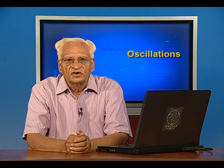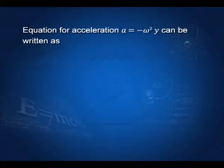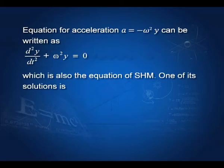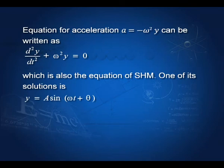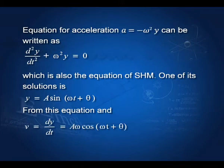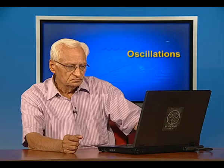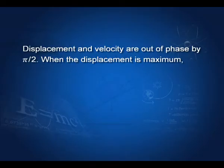The equation a = −ω²y can be written as d²y/dt² + ω²y = 0, which is a second-order differential equation with general solution y = a sin(ωt + θ). From this equation, velocity v = aω cos(ωt + θ). Since y is a sine function and v is a cosine function, there is a phase difference of π/2 between displacement and velocity.